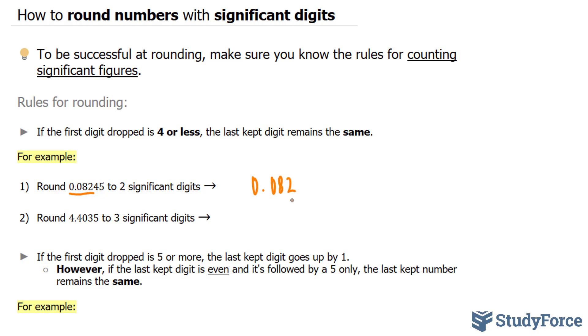Let's try the next one. Round 4.4035 to three significant digits. Now in our case, three significant figures would be 4.40, and everything afterwards, all of this stuff would be discarded.